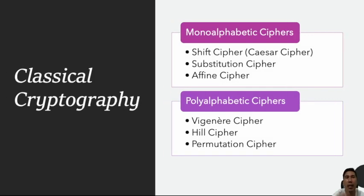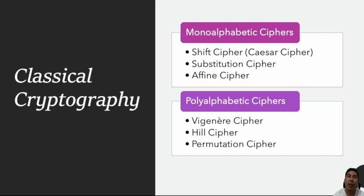Classical cryptography can be either monoalphabetic or polyalphabetic ciphers. For monoalphabetic ciphers, once a key is chosen, each alphabetic character of the plain text is mapped into a unique alphabetic character of the cipher text. Examples include the shift cipher or Caesar cipher, the substitution cipher, and the affine cipher.